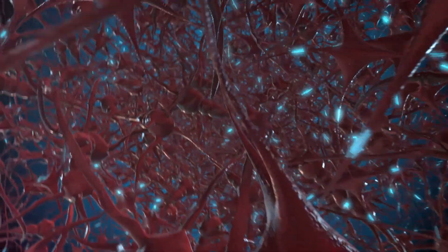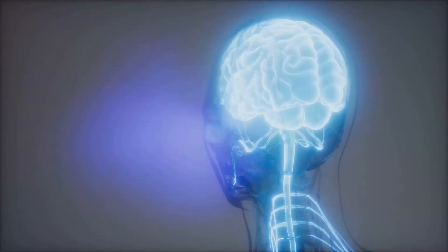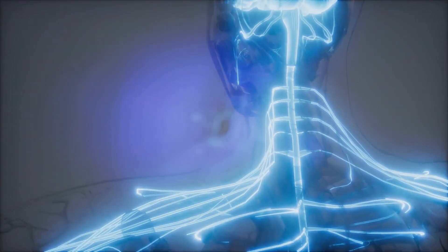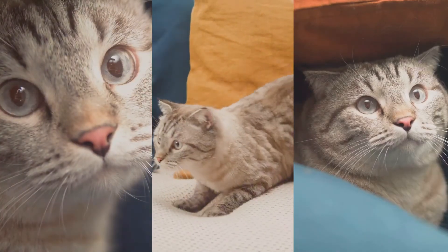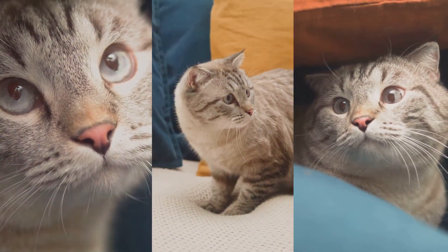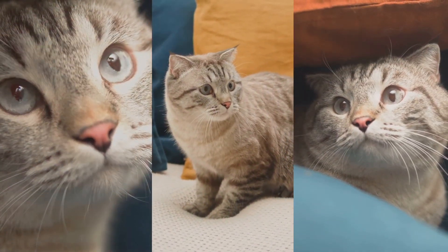But how do they do it? Through something called training. This involves feeding them massive amounts of data, so they can learn and improve over time. For instance, by showing a neural network thousands of pictures of cats and dogs, it learns to distinguish between the two automatically.